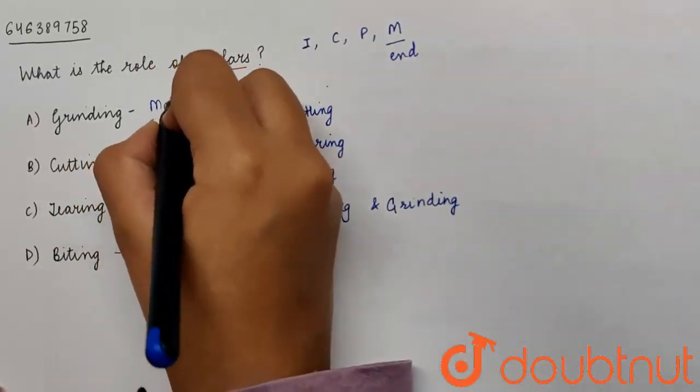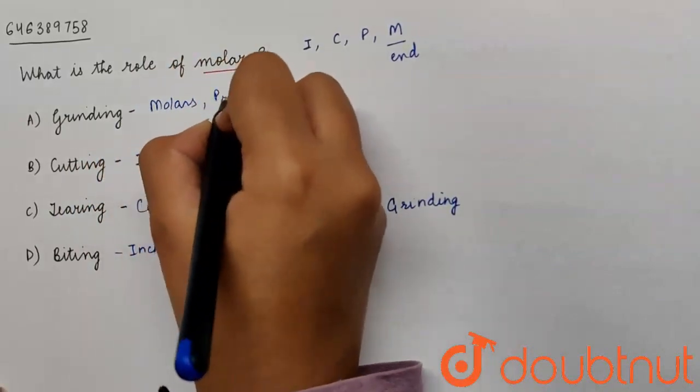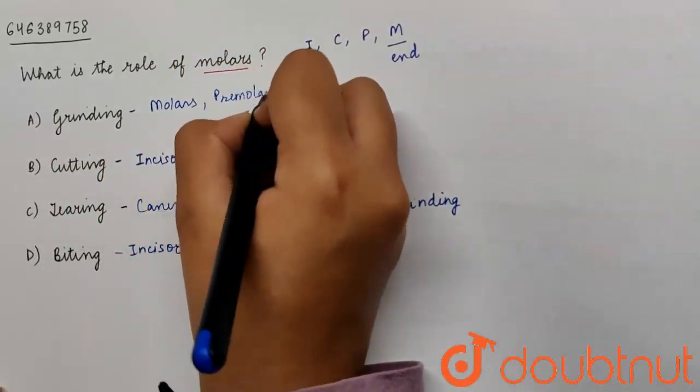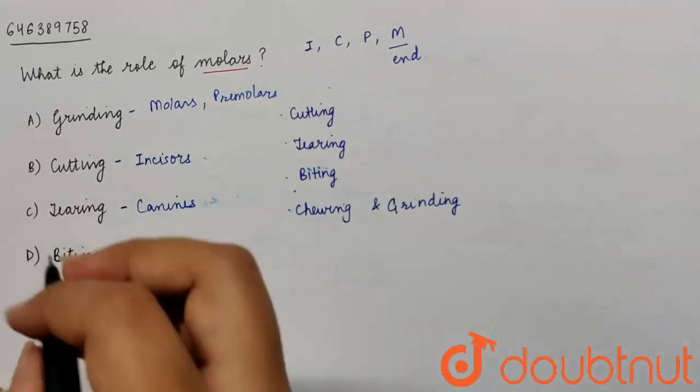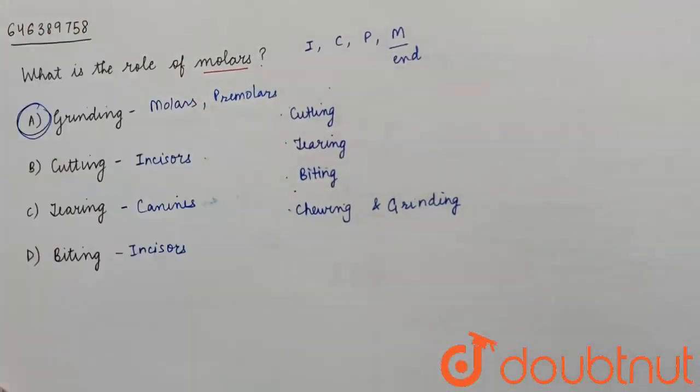And the grinding work is done by molars and premolars. These two usually go together because the positioning is almost similar. Therefore, your answer is A. Grinding.